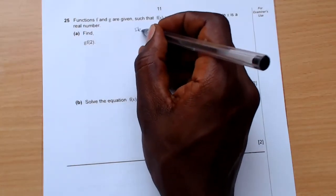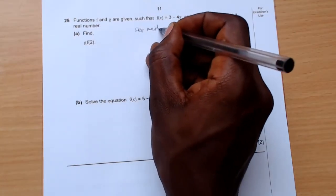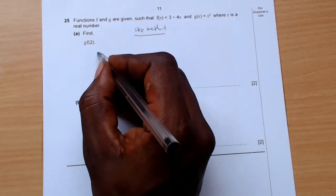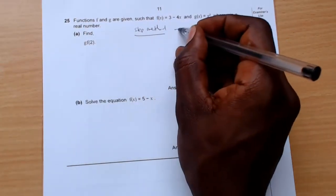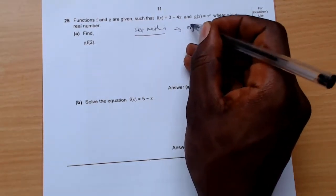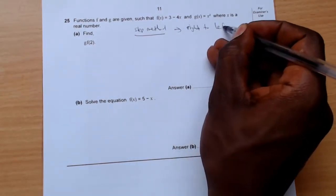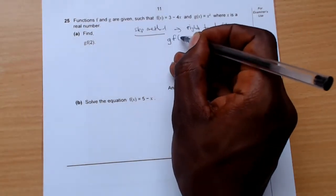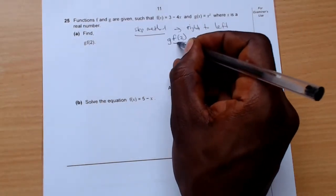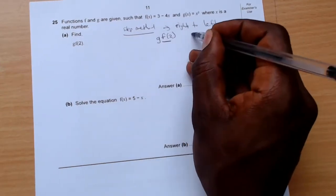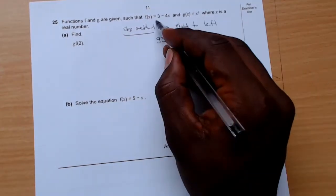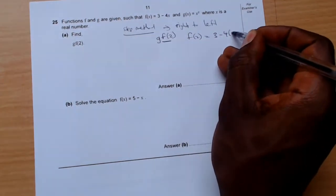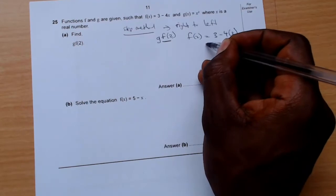In the step method, you always work from the right going left. So it's saying g(f(2)), so you start with f(2). f(2) is f equals 3 minus 4, and put 2, so f(2) is 3 minus 8.